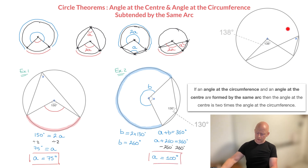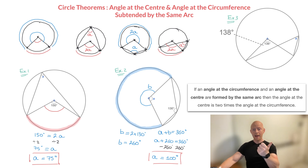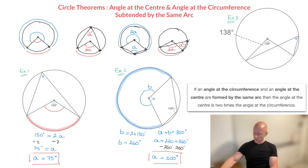I move on to the third and final example — example three. Once again, we're given a circle and we need to find this unknown angle A. A is an angle at the circumference of this circle, and we're given one of the two angles at the center. Angle at the circumference, angle at the center — suggesting we still use the same theorem. The thing to ask ourselves is which arc is subtending the angle at the circumference.